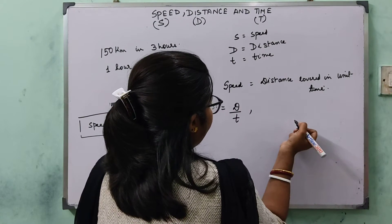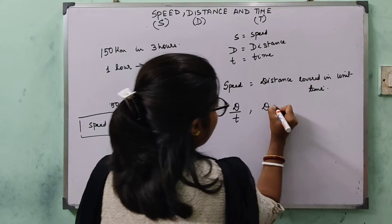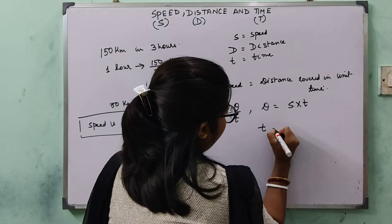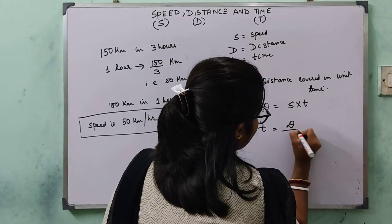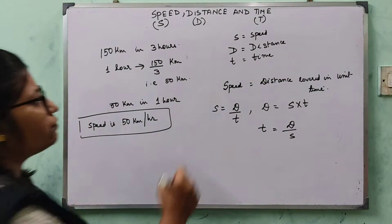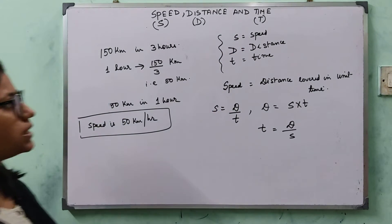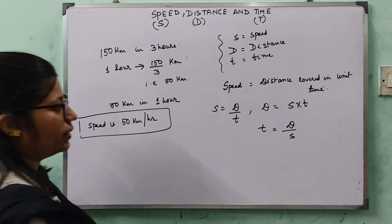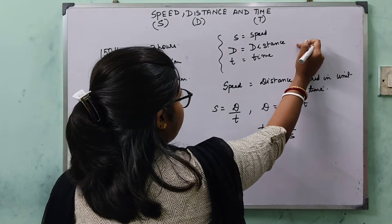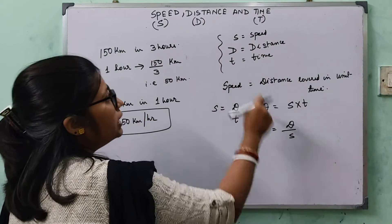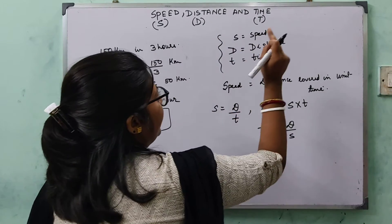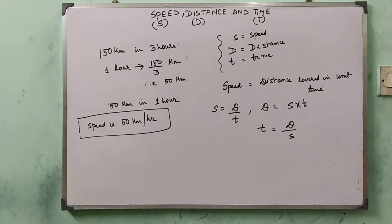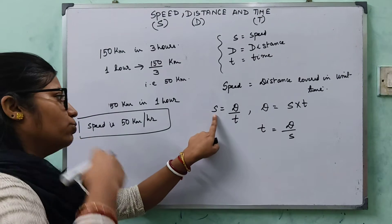From here I can derive the other formulas as well. Distance is equal to speed multiplied by time. And time is equal to distance divided by speed. So if any 2 of these 3 quantities are given, I can find the 3rd. If speed and distance are given I can find time; if speed and time are given I can find distance; and if time and distance are given we can find speed.